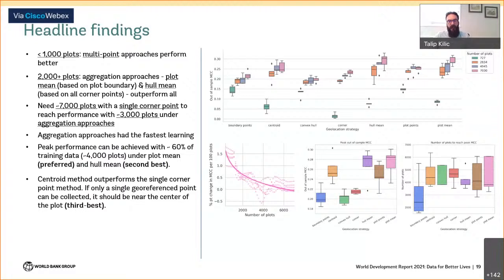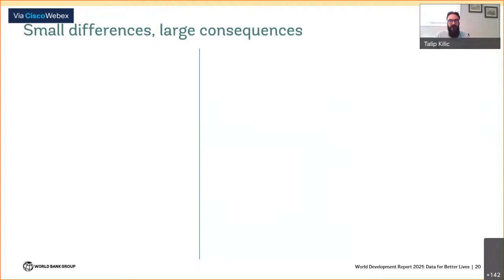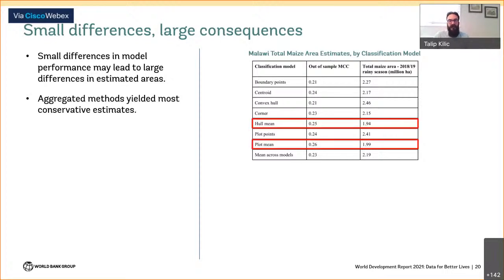The centroid method as the third best solution outperforms the single corner point method across the board. Small differences in model performance — up to five percentage points difference — can actually lead to very large differences in total maize area estimates for an entire country, with significant downstream implications for agriculture and food security policies. Model performance is highest when using survey data with full plot boundaries, and the resulting estimates are also the most conservative in terms of area cultivated with maize.